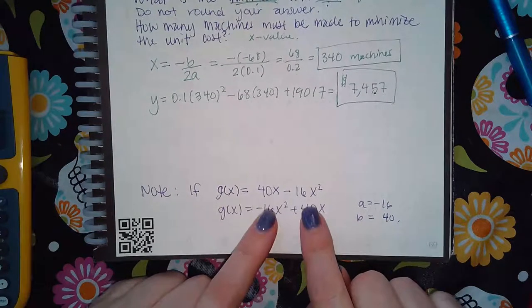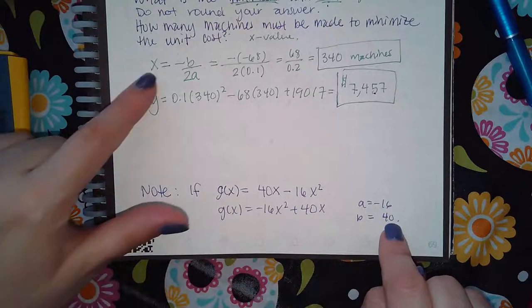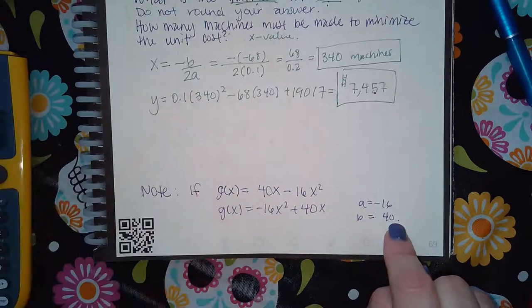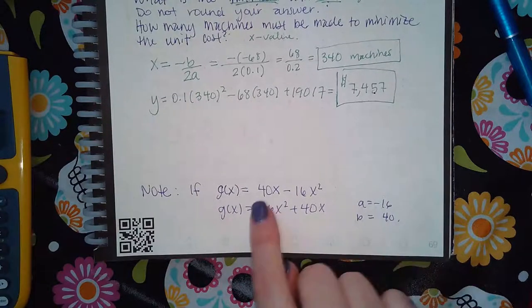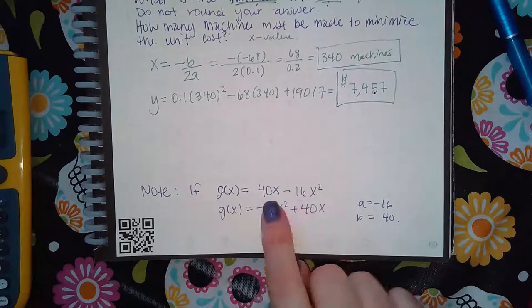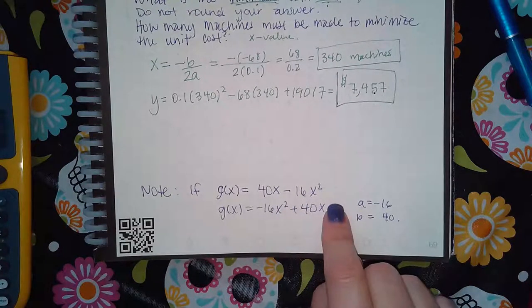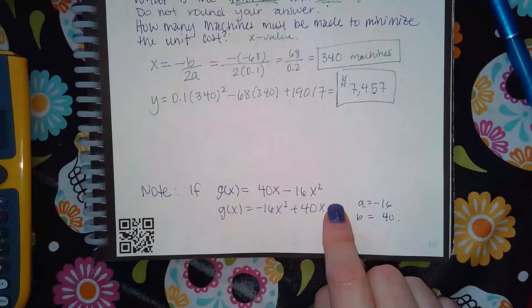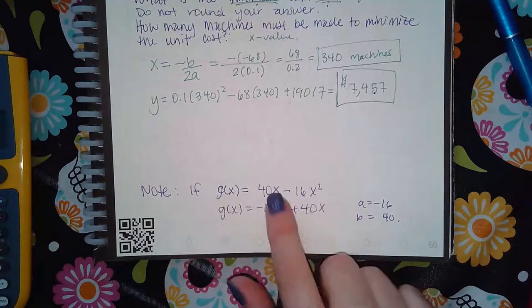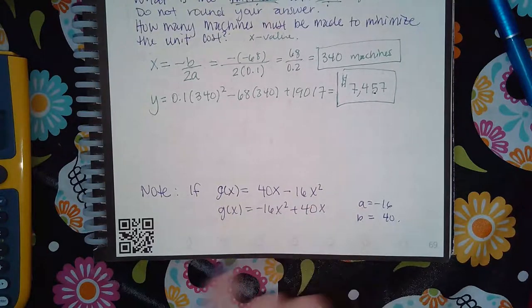So it's important it's in the correct order before you go doing this part, figuring out the negative b over 2a. Because if you don't swap it around, chances are you're going to use the wrong a and the wrong b, and then your answer is going to be all wrong. So make sure you put your functions in order if they're not in order already.